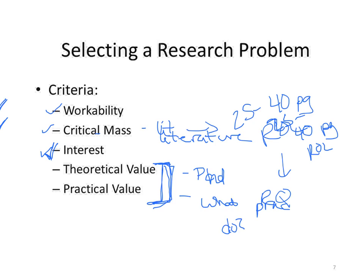Theoretical and practical value are a little bit more important. Theoretical value is very important for students working towards their PhD because it's really going to help advance the literature. Practical value is pretty important at the master's and PhD level because what you're trying to do is give information to practitioners. This is what's going to make your article publishable — can you tell practitioners, based on your findings, here's something else you should think about doing?